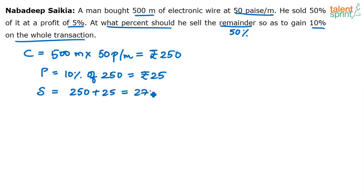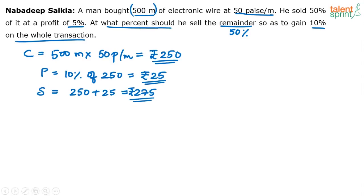I have invested 250 rupees. Since I'm expecting a profit of 25 rupees — 10% — I should be earning 275 rupees. My income should be 275 rupees by selling this entire length of 500 meters. However, this 500-meter length has been sold in two parts: 50% at a profit of 5%, and the other 50% at what profit is the question.